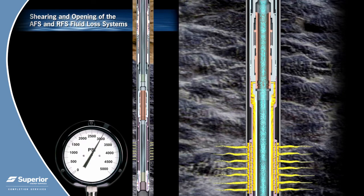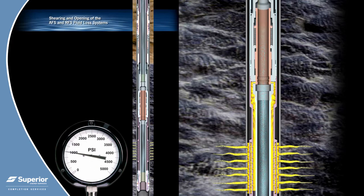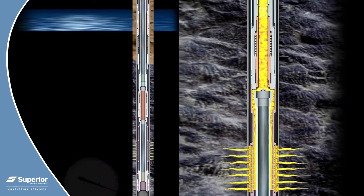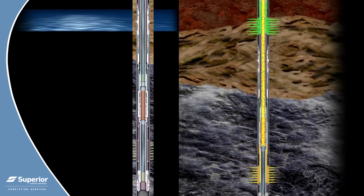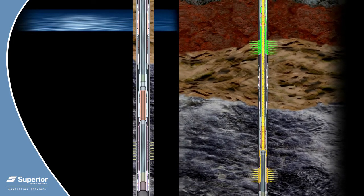Pressure integrity inside the tubing is maintained. This allows overpressure to be applied to both valves to ensure complete actuation before communication to the lower zone occurs. The tubing pressure is then released, allowing the radial flow valve to shift to the fully open position. Both the annular and radial flow valves have dual lock open features and redundant mechanical shifting systems.